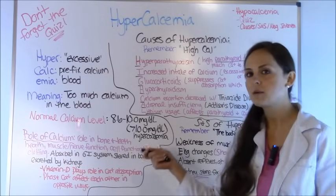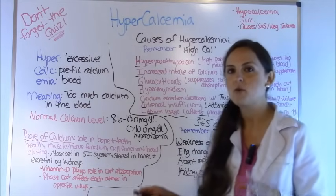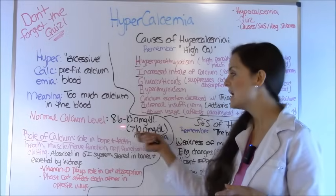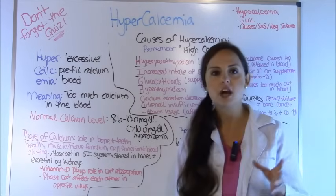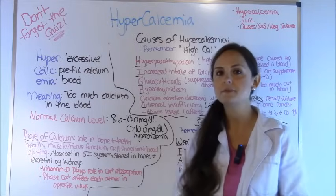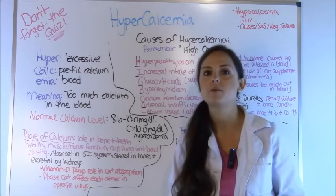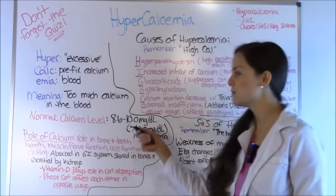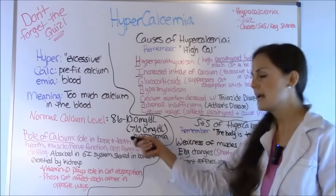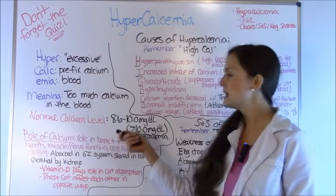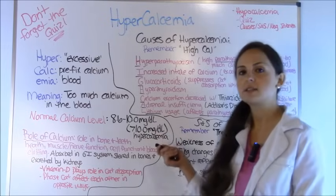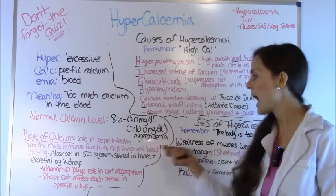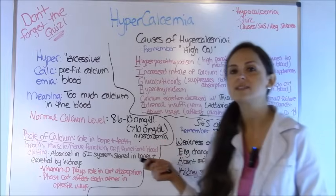What is a normal calcium level? You definitely want to know this because a lot of times on tests they're going to give you a number and you need to know if it's normal or not. Sometimes they will give you a normal value and you'll have to say there's no nursing intervention because it's a normal level. The normal range is 8.6 to 10 milligrams per deciliter, and anything greater than 10 is considered hypercalcemia.